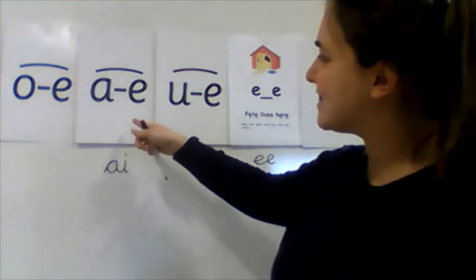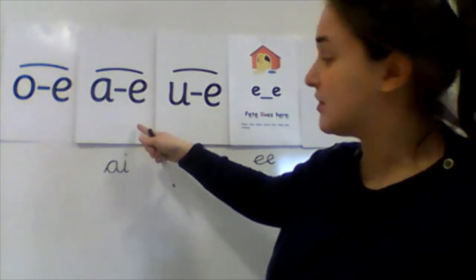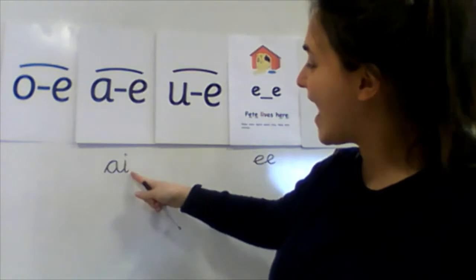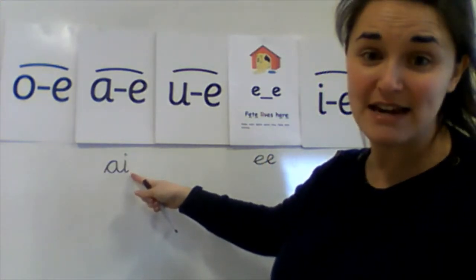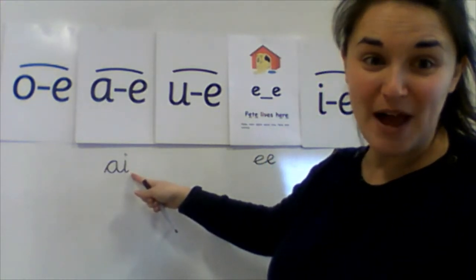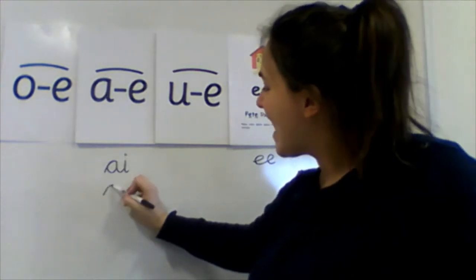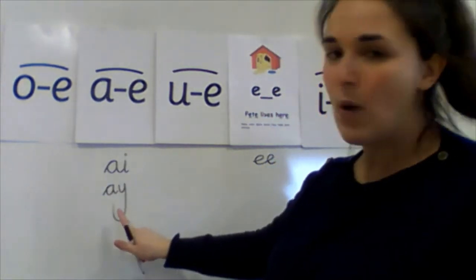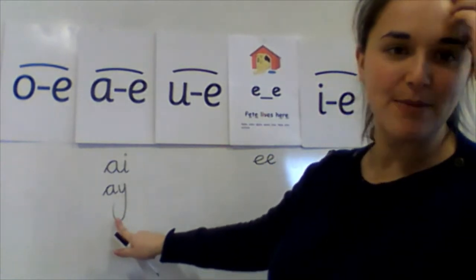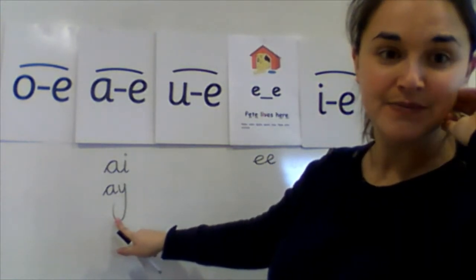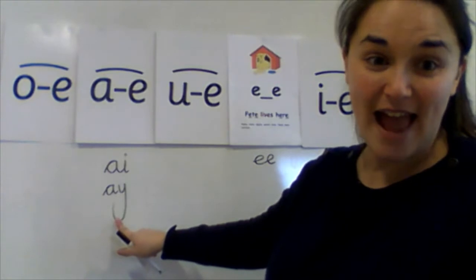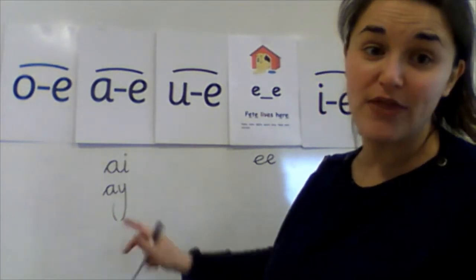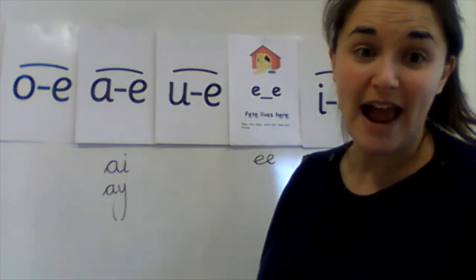So for our A sound let's start with this one first. We already have A-E make a cake, A-I snail in the rain. Did you remember the other way? A-Y may I play? When do I use this type of A? You're right at the end of a word because it's got this Y. I know that that type of A will come at the end of a word.